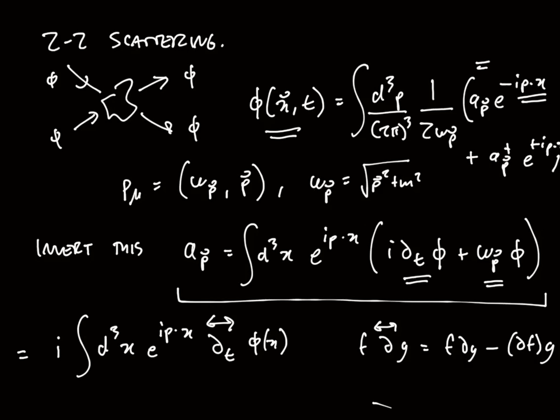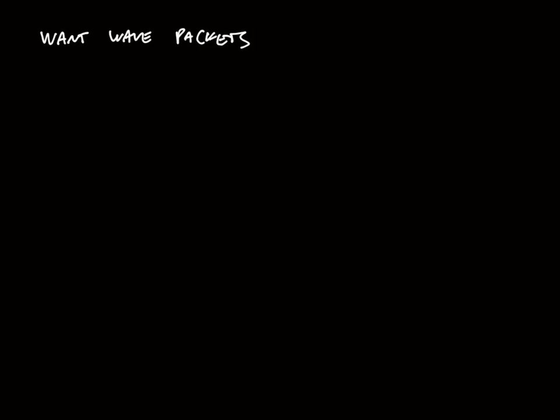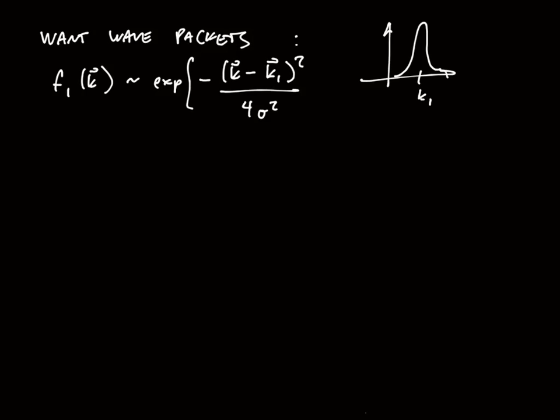What do I mean by that? Well, you know this a_p that we have right here creates a state that is in a momentum eigenstate - in other words, it has a very specific momentum given by p. I want to imagine states that are not exactly momentum eigenstates but instead have some kind of a spread in momentum about some central value. For example, here's some central value k₁. You can imagine a Gaussian envelope for that wave packet. f₁ of k is something like a Gaussian envelope with some width given by σ. It's just some sort of Gaussian envelope with a width σ. The precise form of this does not matter, but the fact that it's not a delta function is going to be important.